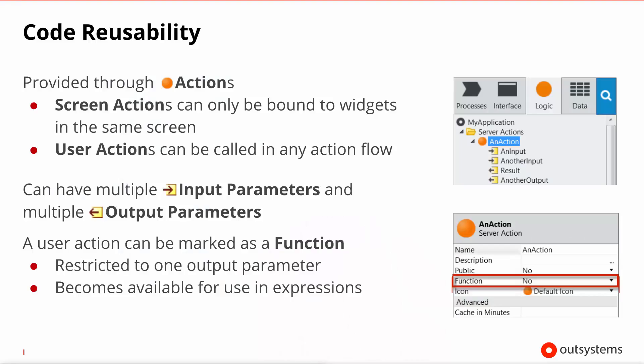The way you can create reusable code is through Actions. You already know Screen Actions, where you implement behaviors specific to the screen, but there are also User Actions, where you can define logic that can be called from any other action. When you create an action, you can define any number of input parameters and their respective types, as well as output parameters. Should you want to call your code from an expression, you can flag it to be a function, but then it must have only one output parameter.